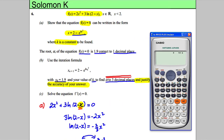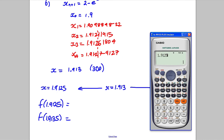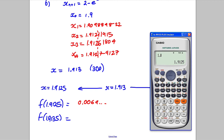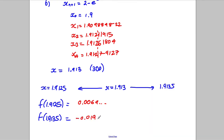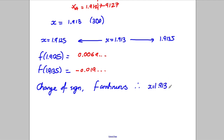Our original function is f(x) = 2x² + 3·ln(2 − x). Calculating at 1.9125 gives 0.0069, and calculating at 1.9135 gives −0.019. There is a change of sign, and f is continuous. Therefore x = 1.913 correct to 3 decimal places is our root.